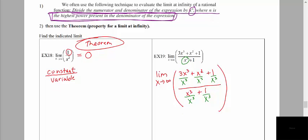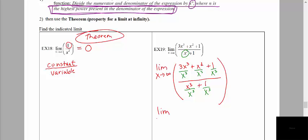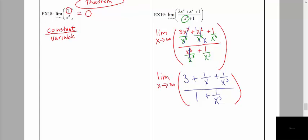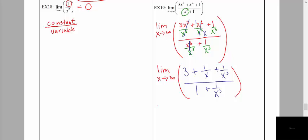Now we reduce each of those fractions. x cubed over x cubed cancels, leaving 3. Canceling x squared from top and bottom leaves 1 over x. Nothing cancels in the next term, so we get 1 over x cubed. In the denominator, x cubed divided by itself leaves 1, and the second fraction gives 1 over x cubed. Now we evaluate the limit of each term individually as x approaches positive infinity.